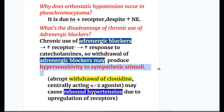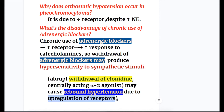Abrupt withdrawal of clonidine, which is a centrally acting alpha-2 agonist — not an antagonist — may cause rebound hypertension due to upregulation of receptors. Clonidine causes decreased noradrenaline release, which causes upregulation and an increased number of receptors, resulting in rebound hypertension.